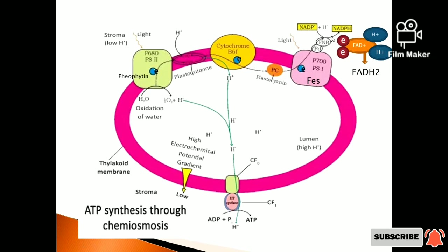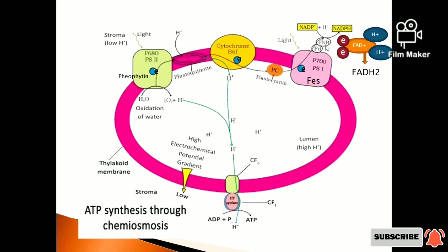NADP Reductase (FNR) contains FAD+. FAD+ accepts 2 electrons and 2 H+, and is reduced to FADH2. Then NADP Reductase transfers those electrons and H+ to NADP+. NADP+ accepts 2 electrons and H+, and is reduced to NADPH.